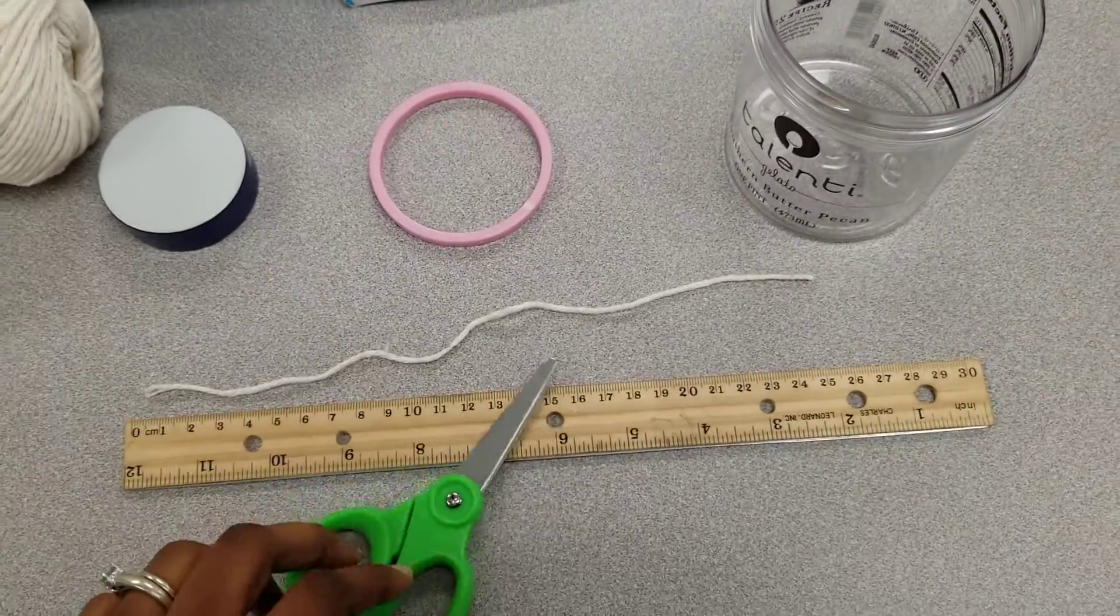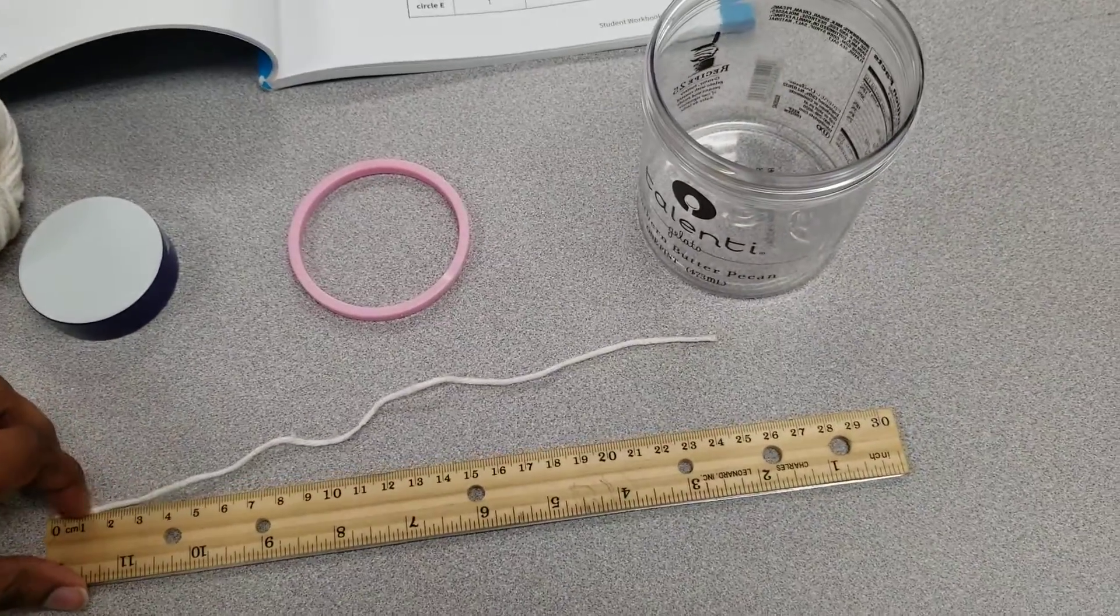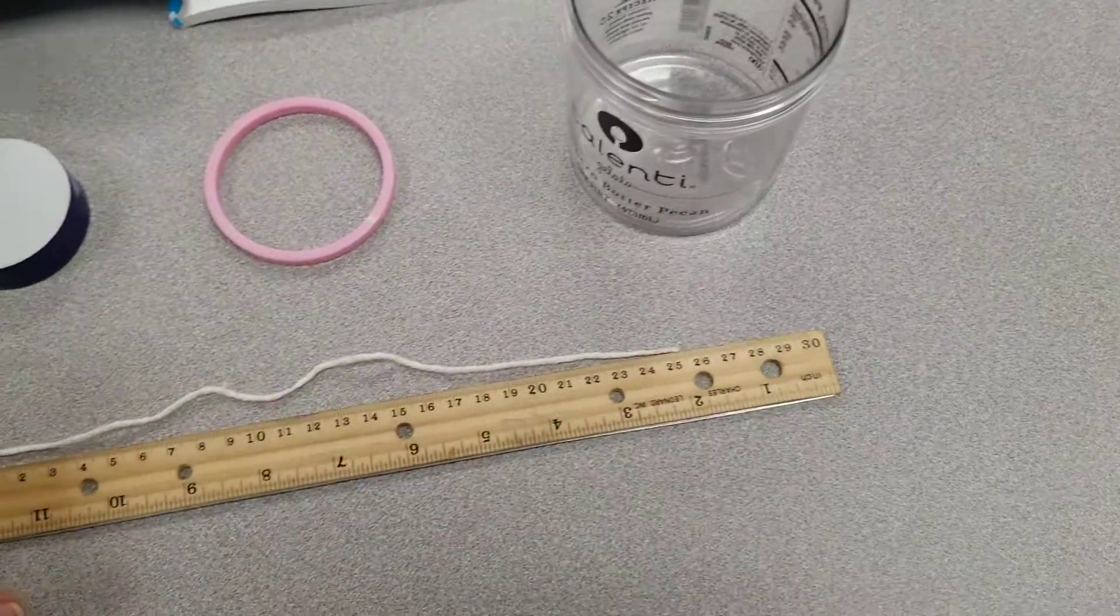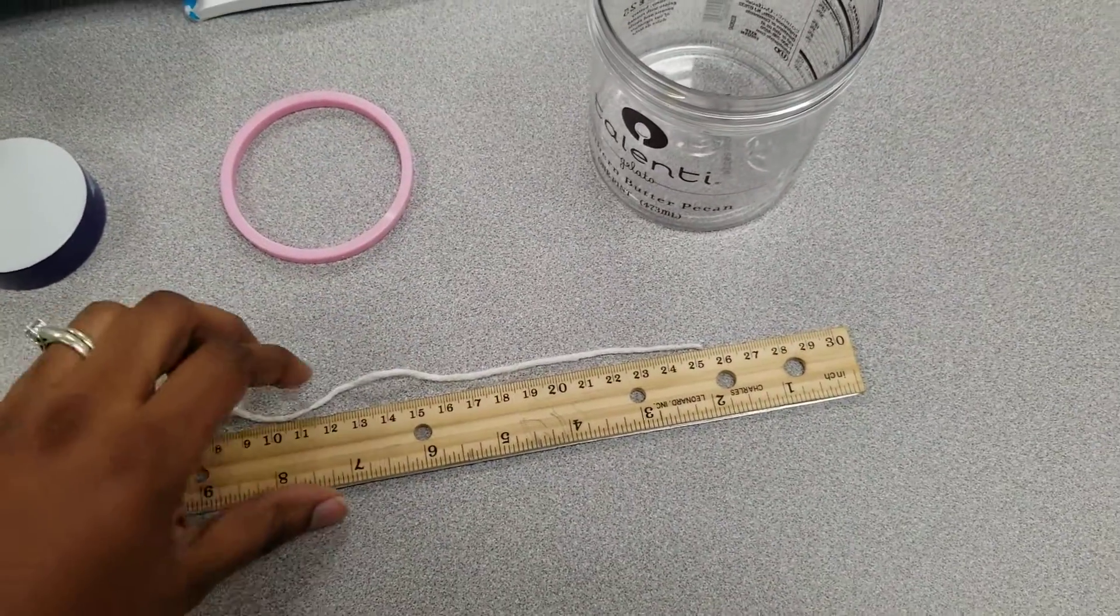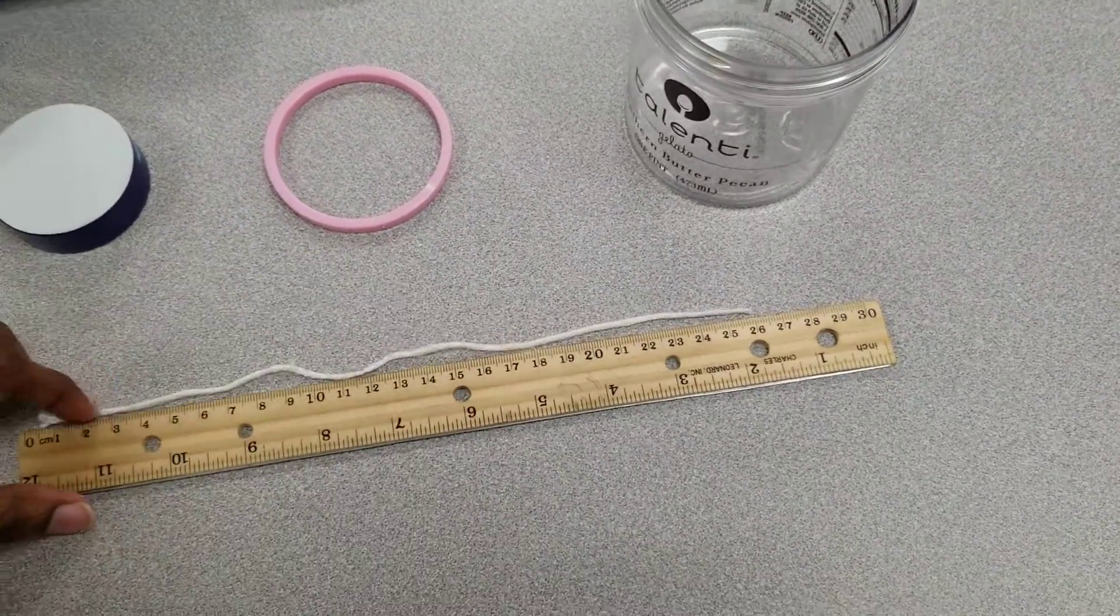After that, I want to use my centimeters to measure the length of the string, and the length of the string should be the circumference of my object.